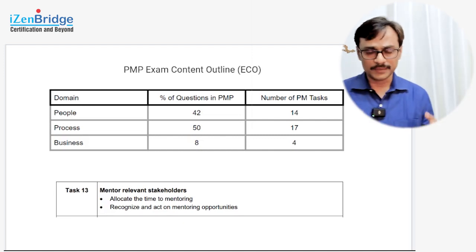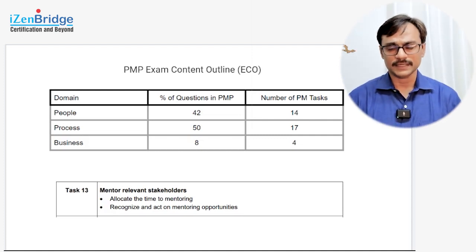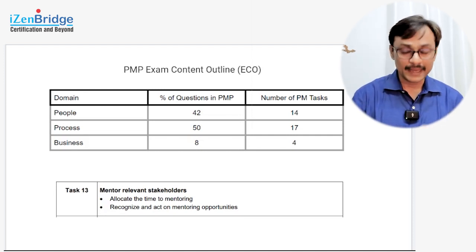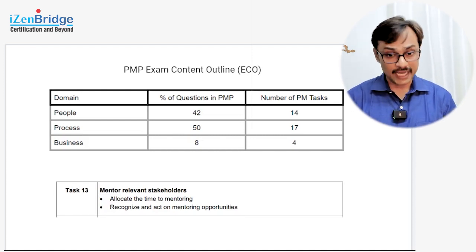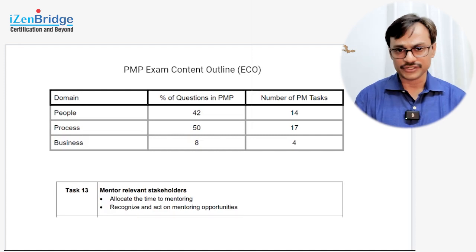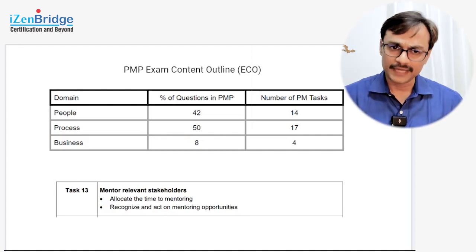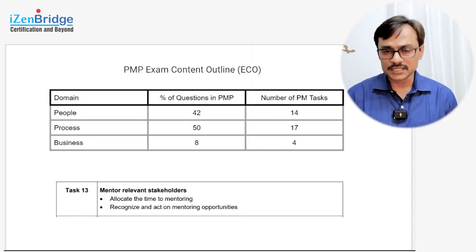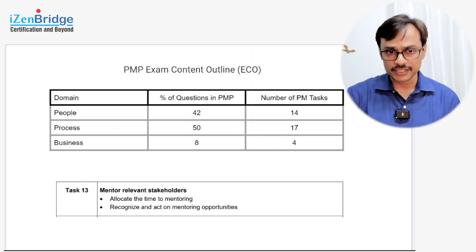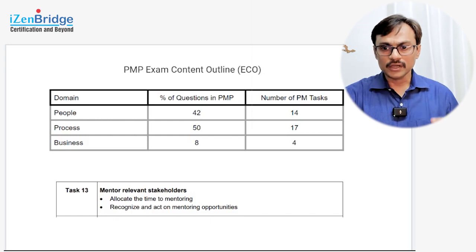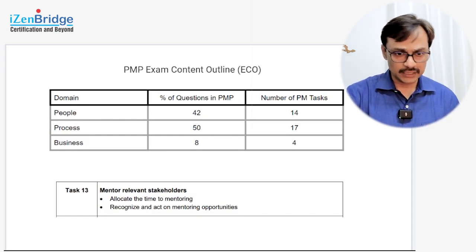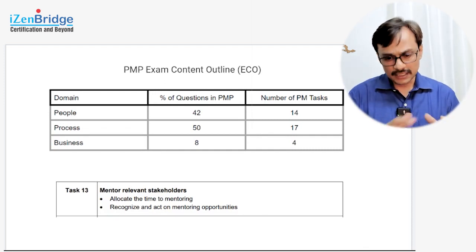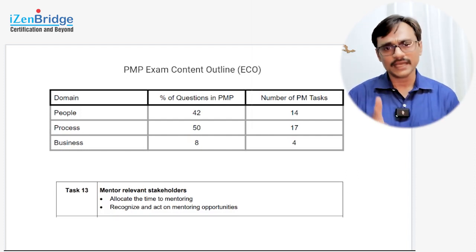Task 13 comes under the people domain, which overall gives 42% of exam marks across 14 tasks. One of those tasks focuses on managing and mentoring relevant stakeholders — allocate time to mentoring and recognize and act on mentoring opportunities. As a project manager, you should be doing mentoring. Previously we spoke about training; now we are talking about mentoring. Both tasks focus on developing good skills in team members — technical competency and emotional intelligence — so team members can perform well and achieve project objectives.